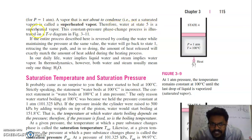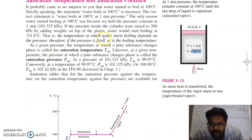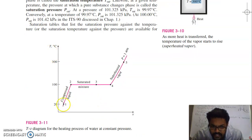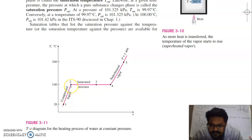Therefore, water at state 5 is a superheated vapour. This constant pressure phase change process is illustrated on a T-V diagram. So starting point is here — when your water is at 20 degree Celsius it is in liquid form. As you start supplying heat, its temperature will start to rise. From state 1 to state 2, only temperature will rise and water remains as compressed liquid, meaning the phase does not change. At state 2, when temperature reaches 100 degree Celsius and you are in liquid phase.